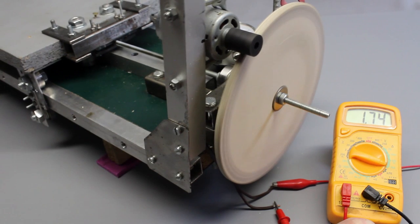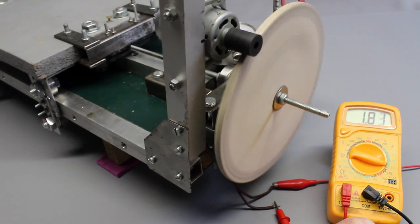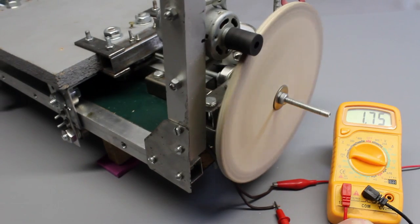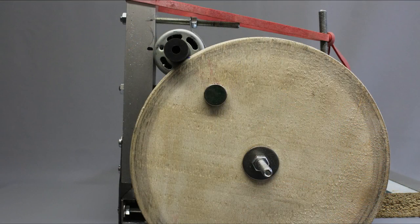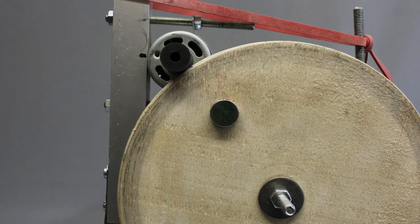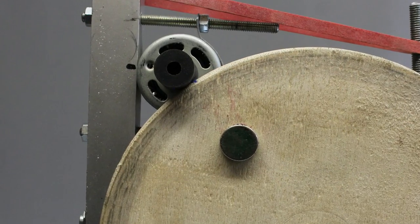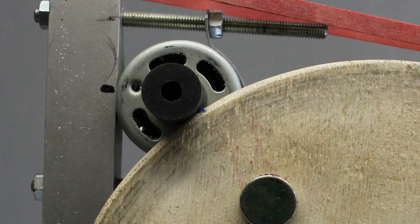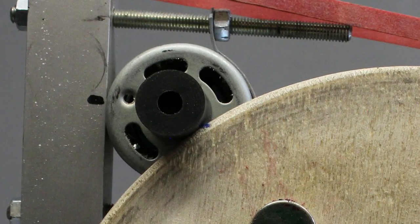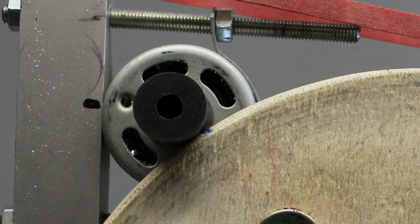This motor consumes 1.8A at 12V, thus the input power is 22W. The pulley on the motor shaft is a rubber roll from an old printer with an outer diameter of 15mm. The resulting gear ratio is approximately 11 to 1 and the rotational speed of the threaded rod is 600 rounds per minute.